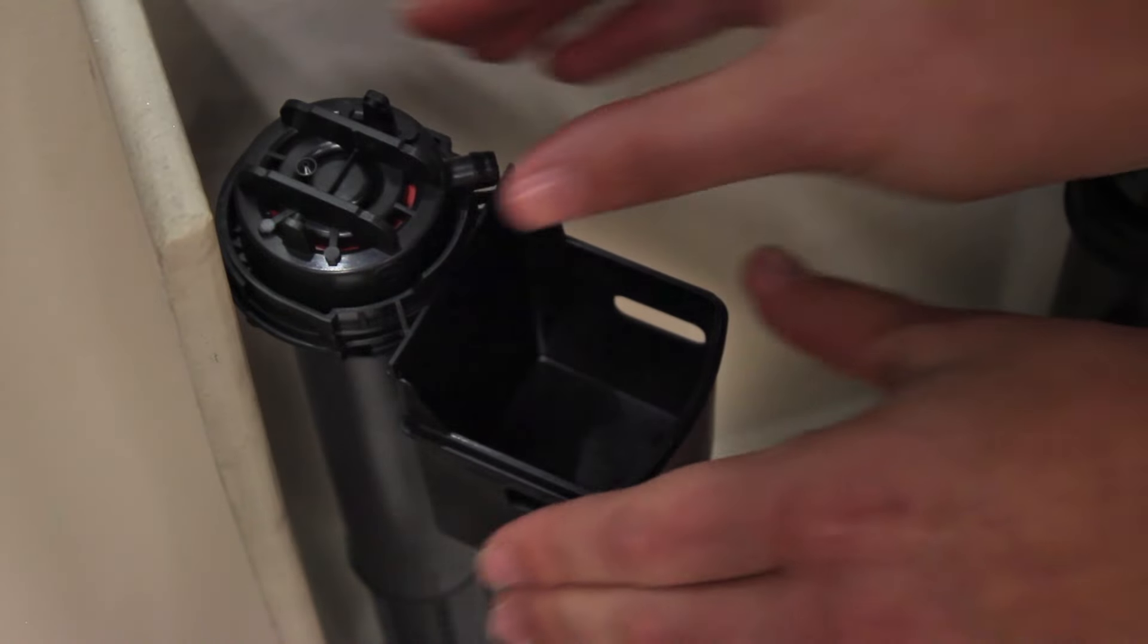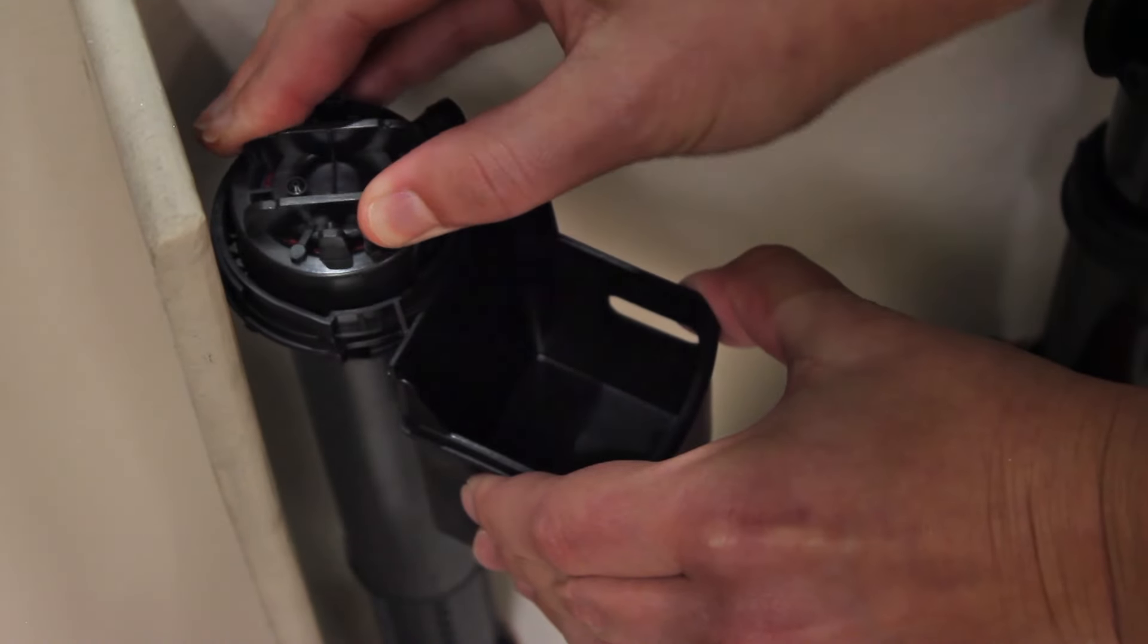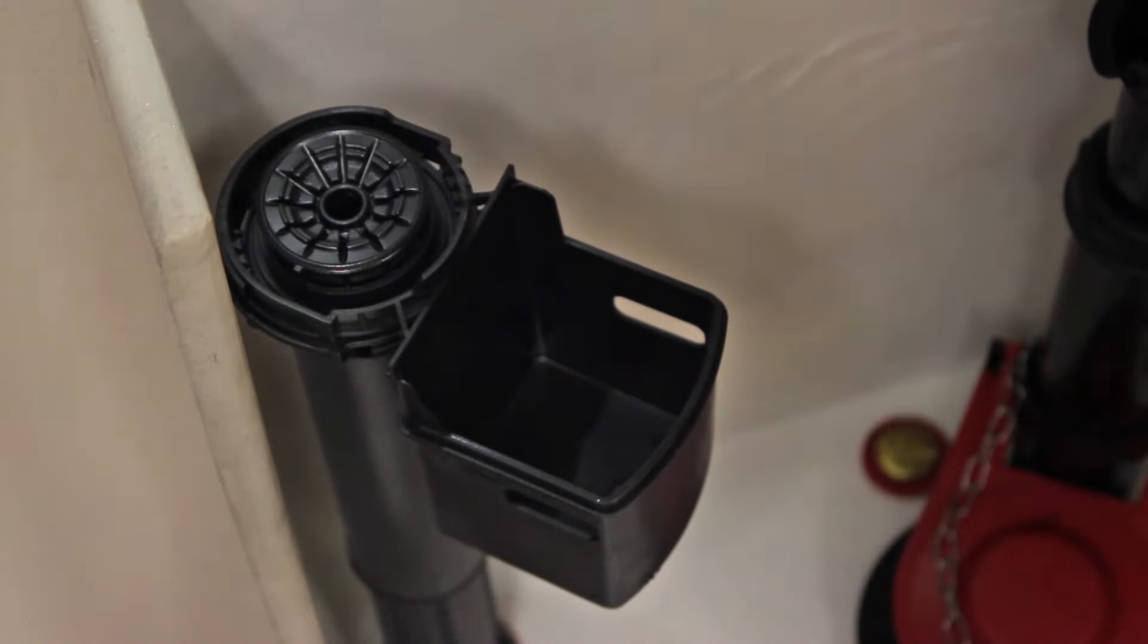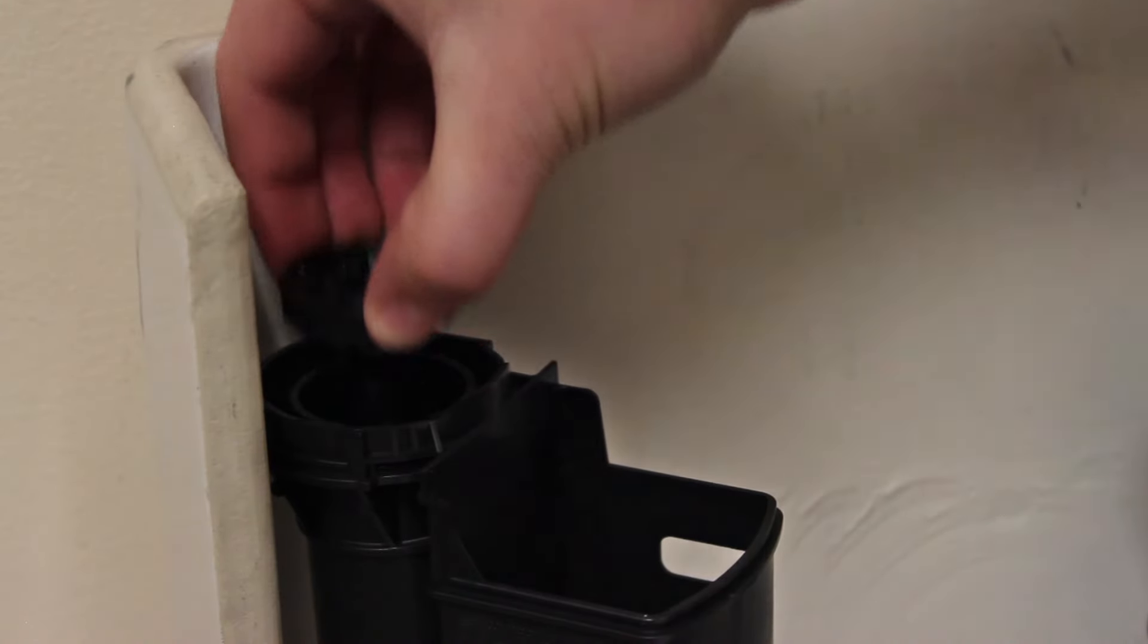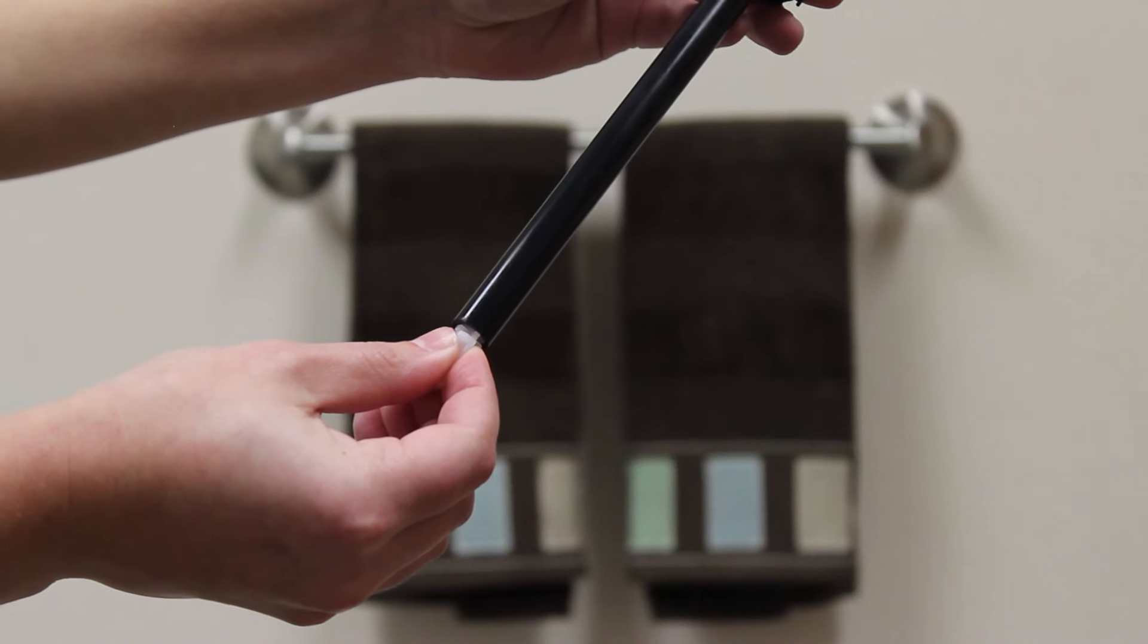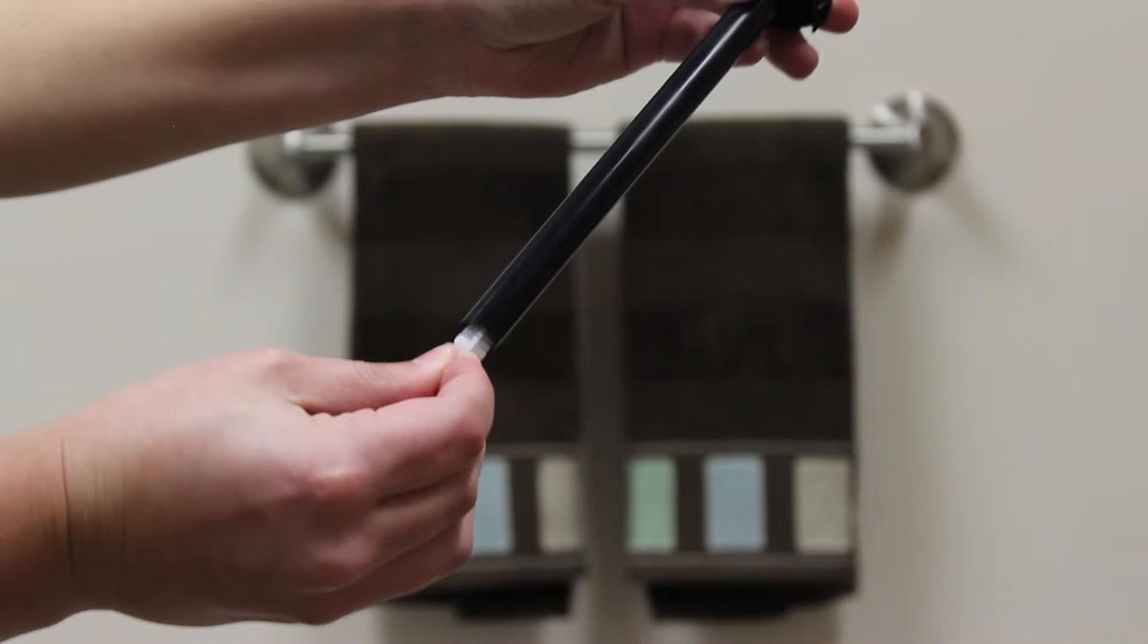Hold the valve body with one hand and twist the cap counterclockwise one-eighth turn to remove. Now remove the supply tube from the valve. Pull the white strainer from the bottom of the supply tube.